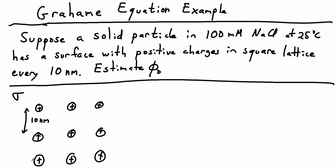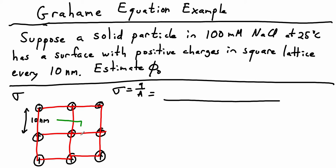First, let's calculate the surface charge density based on the data. We know sigma is defined as charge over area. If we look at the square lattice, we can see that in each square there's one charge. Or equivalently, each red square has a quarter charge, which adds up to one charge.